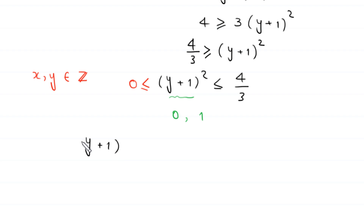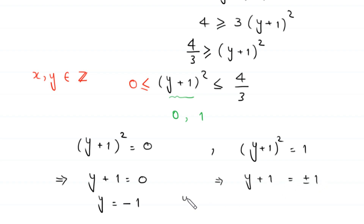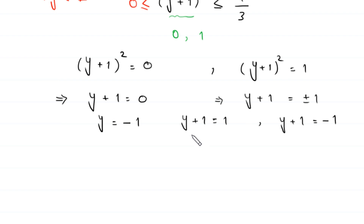So y plus 1 whole squared can only be equal to 0 or 1. When it equals 0, we get y plus 1 equals 0 and y equals negative 1. When it equals 1, we get y plus 1 equals plus or minus 1, giving y equals 0 or y equals negative 2. So the three values of y are negative 1, 0, and negative 2.